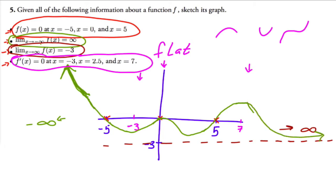Just to give another idea of what else could happen, you could also have a function that comes down here, touches the zero, is flat, then comes down and back up again. For example, it could be flat here and come down here, then come back up flat, and then go toward the asymptote. There are lots of different variations that are allowed.